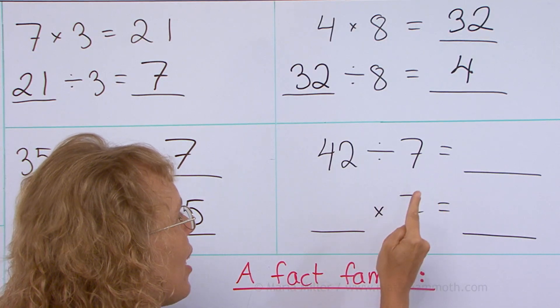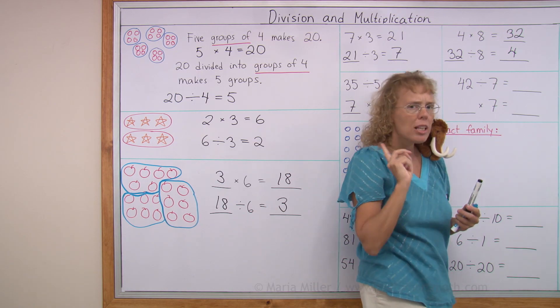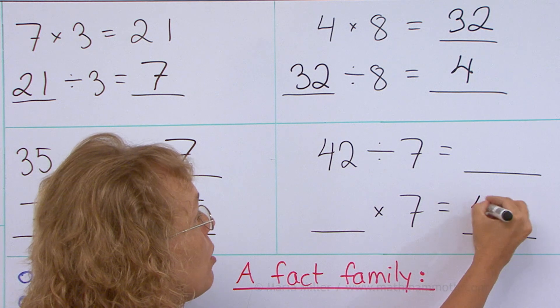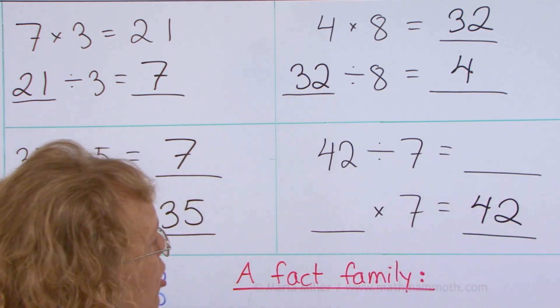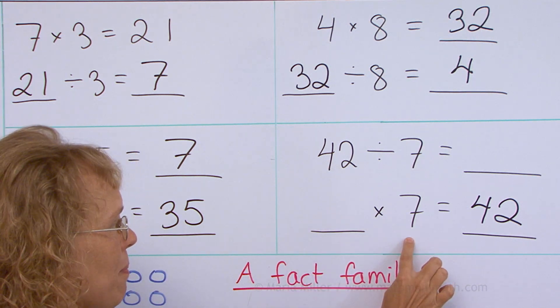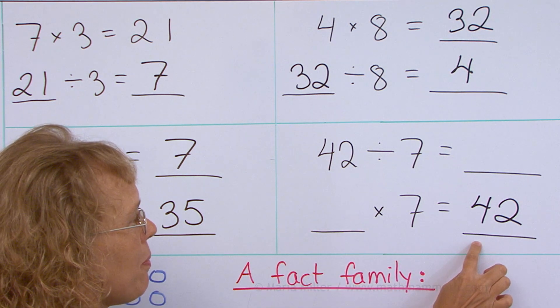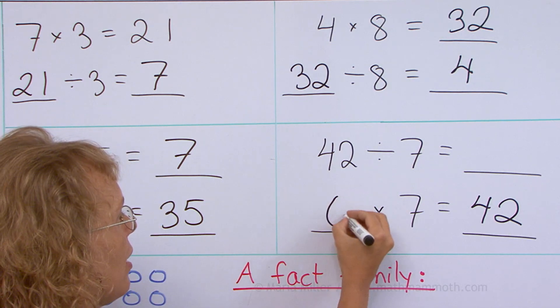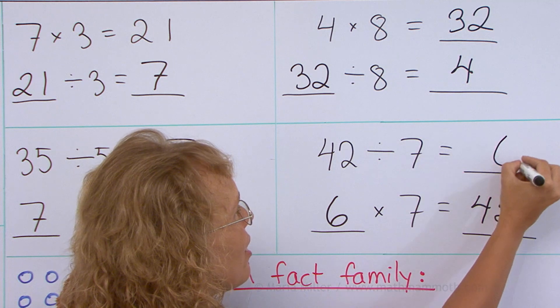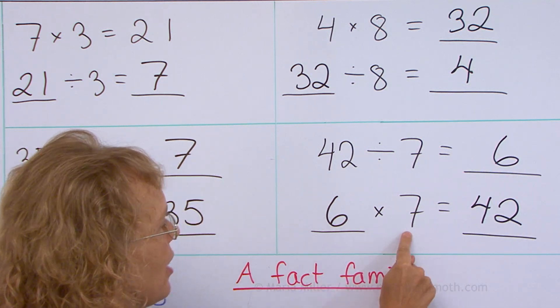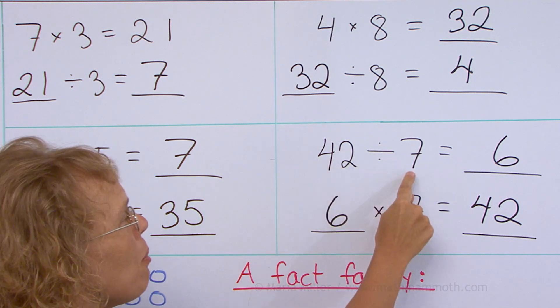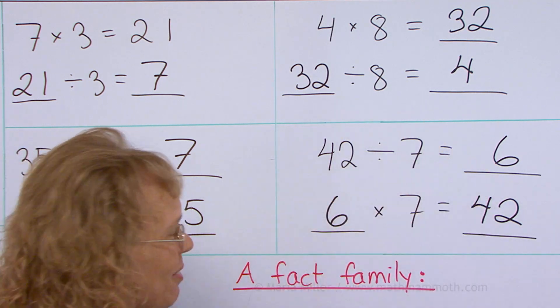42 divided by seven. But hold on. Let's think about the multiplication first. Something times seven equals 42. That is my multiplication. And now you think of your multiplication tables. What number goes here? How many times seven makes 42? The answer is six. You know that by knowing the multiplication tables. So six goes here. And it makes sense because six groups of seven equals 42. In division, we have 42. And how many sevens are in 42? Six.